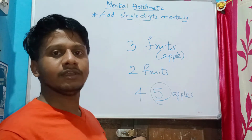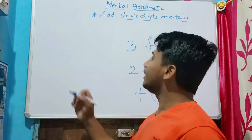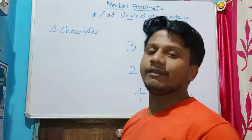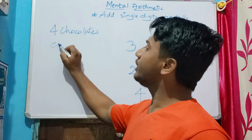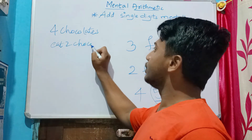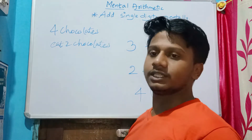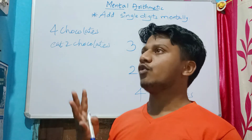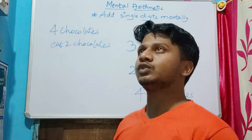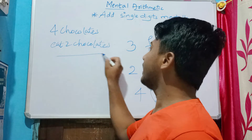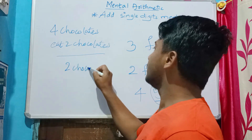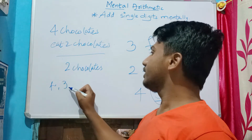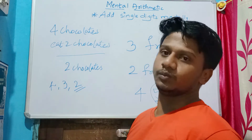One more example — consider you were having four chocolates with you, out of which you eat two chocolates. Now how many chocolates do you have left? I was having four chocolates and I ate two, so counting back: after four, three, two — I'm left with two chocolates.